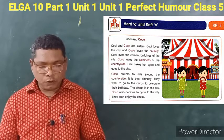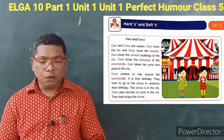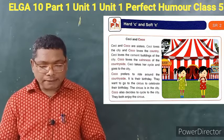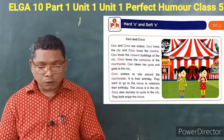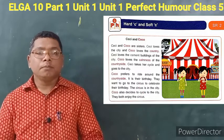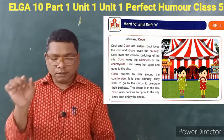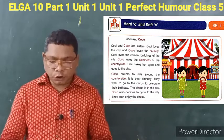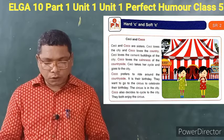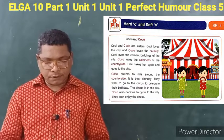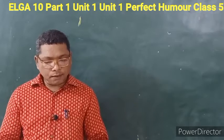Coco prefers to ride around the countryside. Coco and countryside are both hard C. It is their birthday and they want to go to the circus to celebrate. Circus and celebrate — both have the S sound, so they are soft C. Coco also decides to cycle to the city, and they both enjoy the circus.